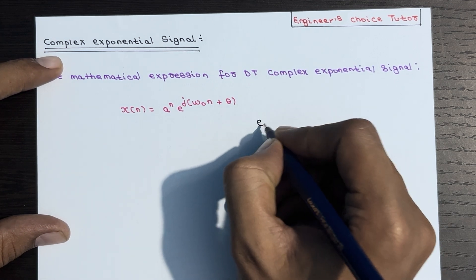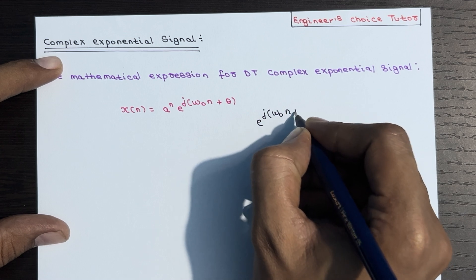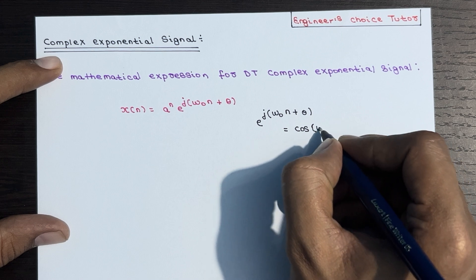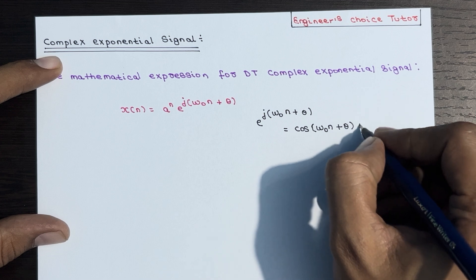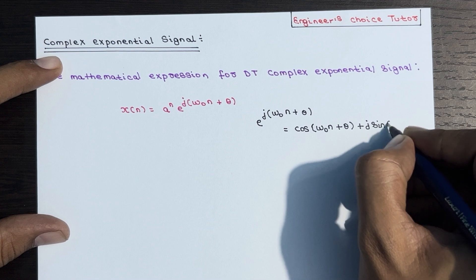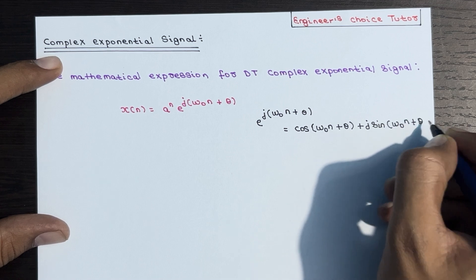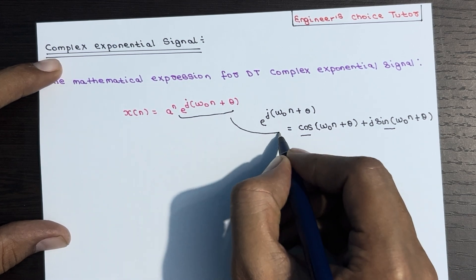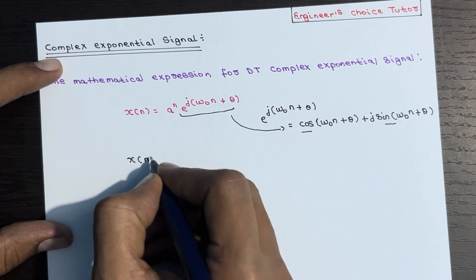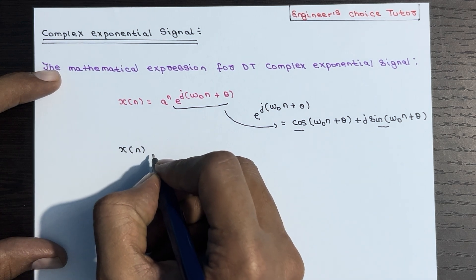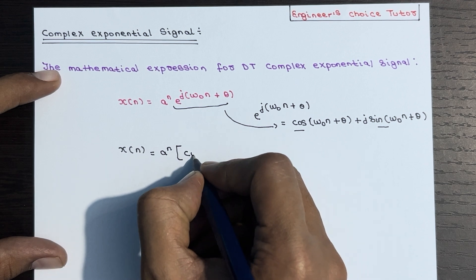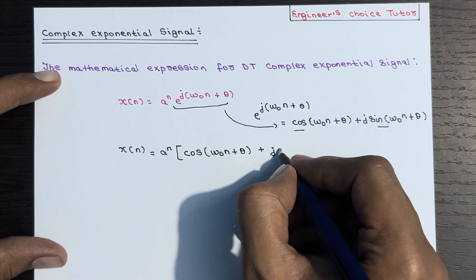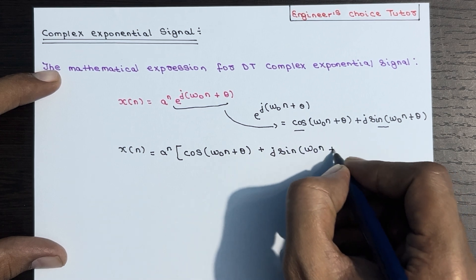We know that we can write e to the power j times (omega-naught n plus theta) as equal to cos(omega-naught n plus theta) plus j times sin(omega-naught n plus theta). So this expression is equivalent to the exponential form, and we simply replace that part in x of n.